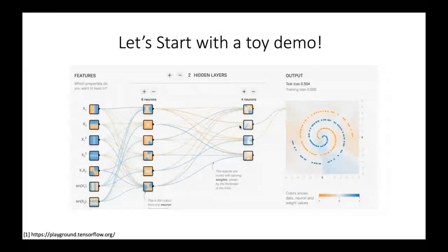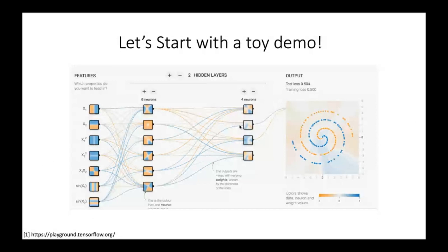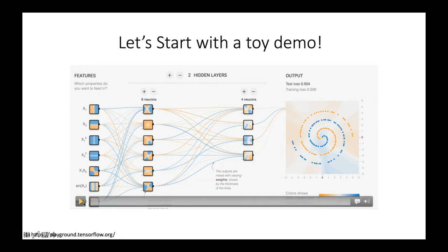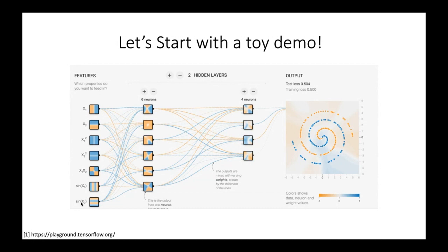Let's start with a very simple toy model. Imagine a simple task where on the right we have two kinds of dots — yellow dots and blue dots scattered in 2D space — and we want to classify them. We build a very simple network with inputs x1, x2, x1 squared, x2 squared, and we can visualize each node as a 2D plane, showing the decision boundary of each node directly. It is a simple model — totally visible because of its simplicity. Let's start training and see how the visualization of every unit evolves.